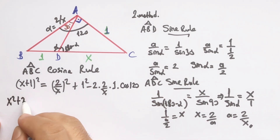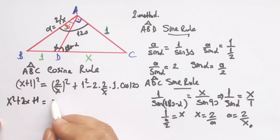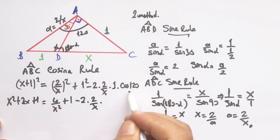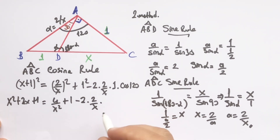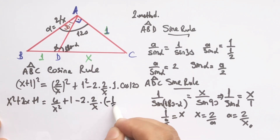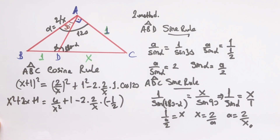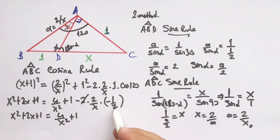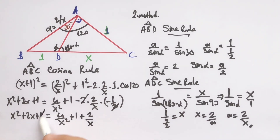Expanding: x² + 2x + 1 equals 4 over x² + 1 minus 2 times (2 over x) times cos 120°. Since cos 120° = −1/2, this becomes: x² + 2x + 1 = 4 over x² + 1 + 2 over x. Simplifying and multiplying through by x²: x²(x² + 2x) = 4 + 2x.